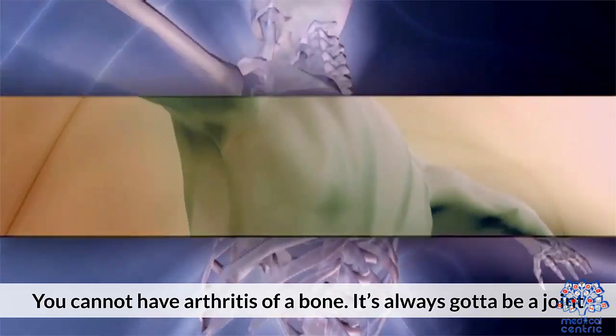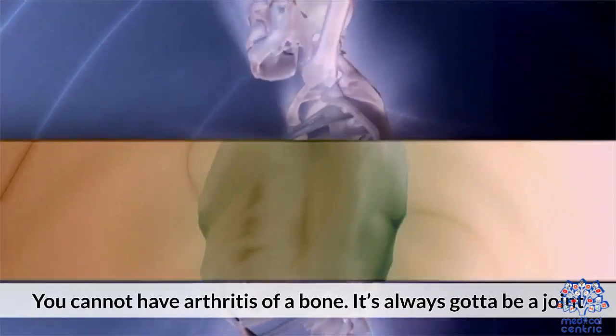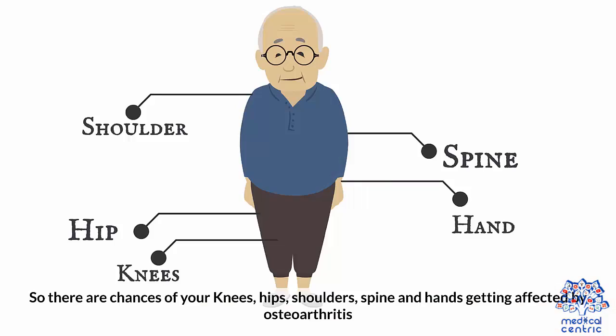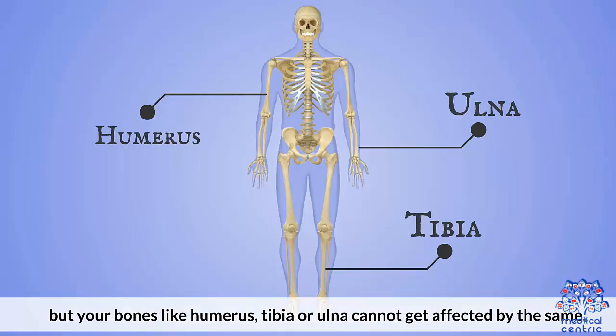You cannot have arthritis of a bone — it's always got to be a joint. So there are chances that your knees, hips, shoulders, spine, and hands get affected by osteoarthritis, but your bones, like the humerus, tibia, or ulna, cannot get affected by the same.